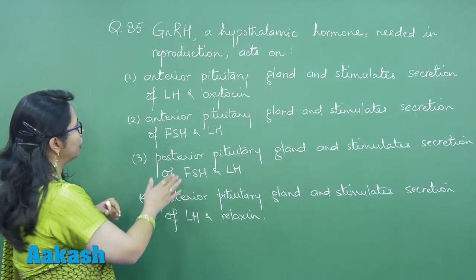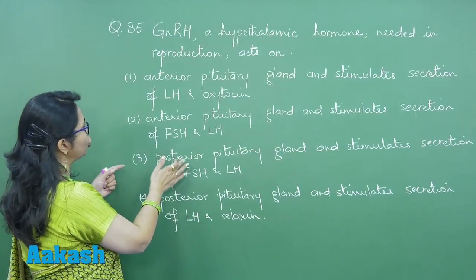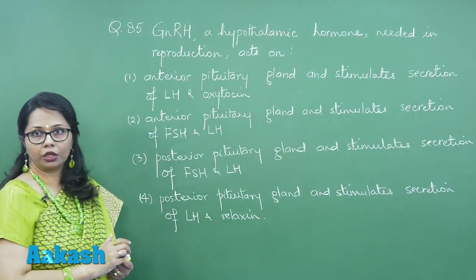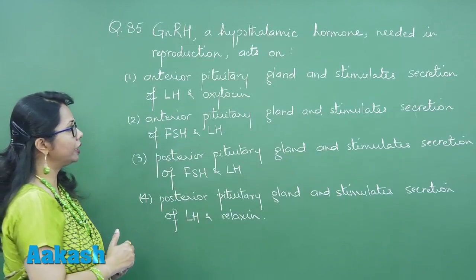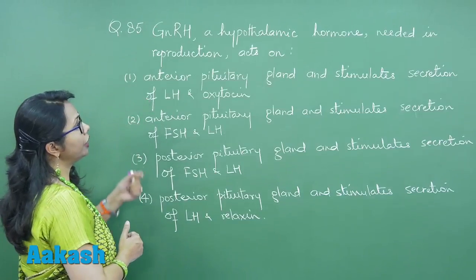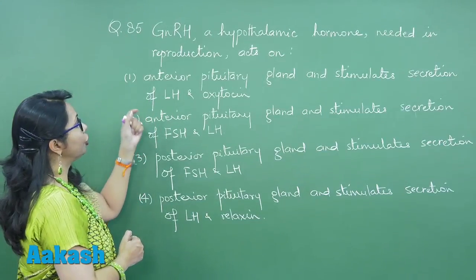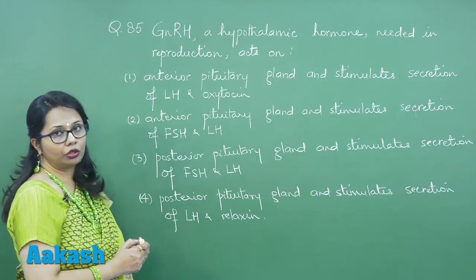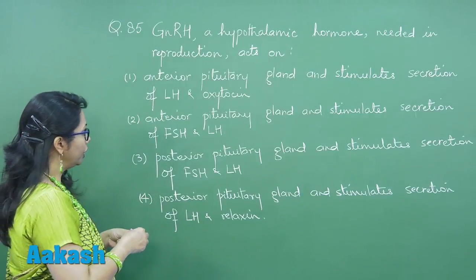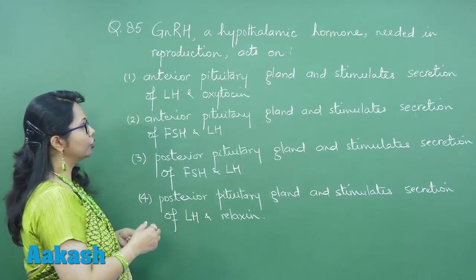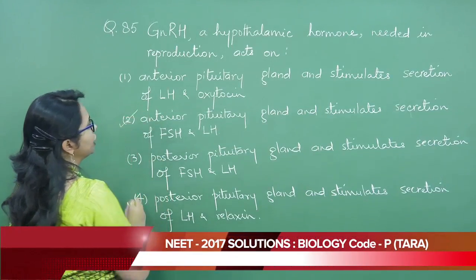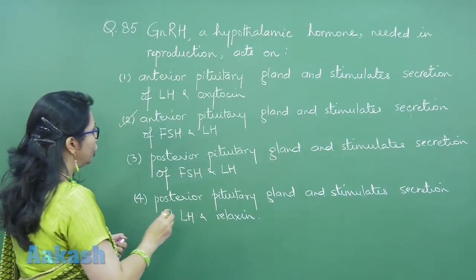As a result, one option suggests it stimulates secretion of LH and oxytocin — but that is not correct at all, because oxytocin is released from the posterior pituitary. So that option is wrong. The correct choice is the second one, where GNRH stimulates the secretion of FSH and LH.